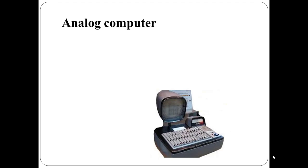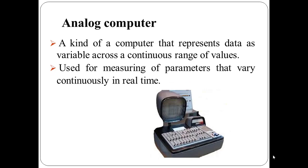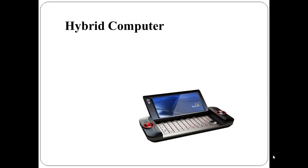Analog computer is another kind of computer that represents data as a variable across a continuous range of values. Analog computers are used for measuring parameters that vary continuously in real-time, such as temperature, pressure, and voltage. Analog computers may be more flexible but generally less precise than digital computers. A slide rule is an example of an analog computer.